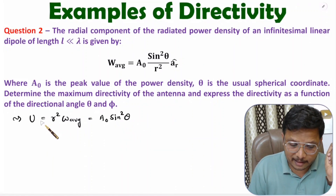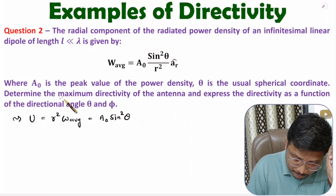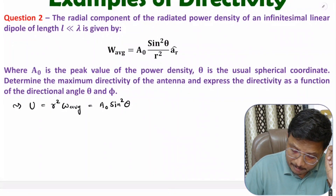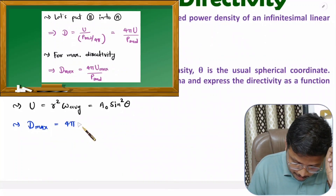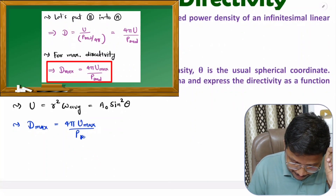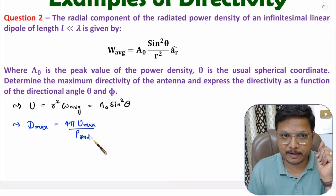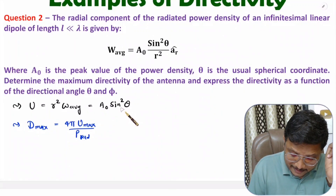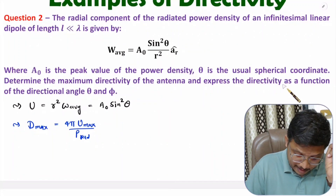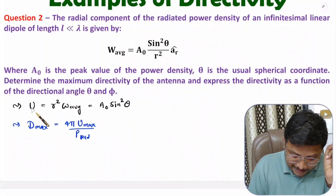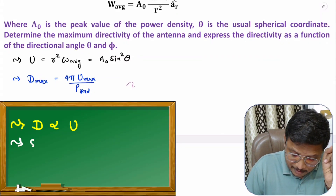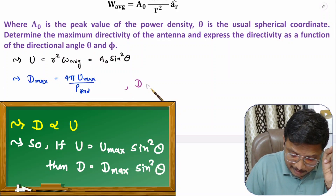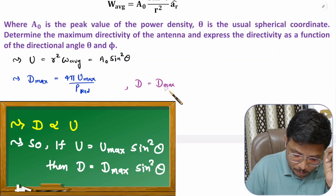Now, based on radiation intensity, one can calculate directivity. Here first we will identify maximum directivity. To calculate maximum directivity: D_max = 4π·u_max / P_rad. If you want to express directivity as a function of theta and phi, then directivity equals maximum directivity into that function — because the maximum radiation intensity here is A₀.